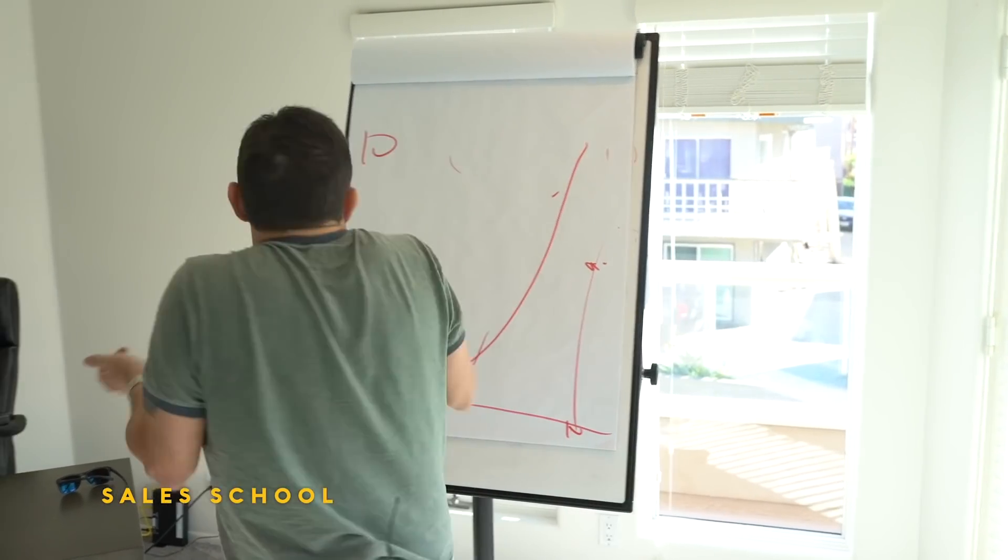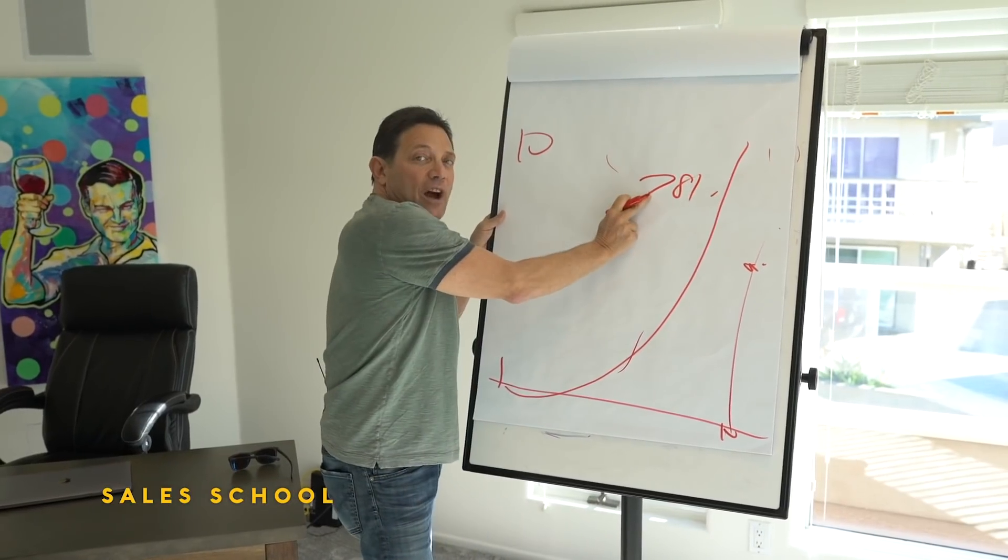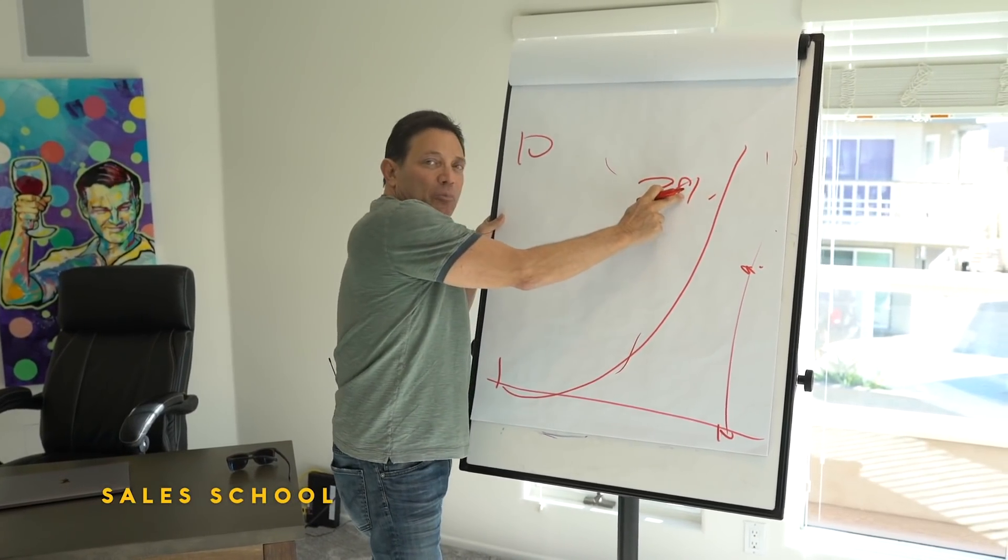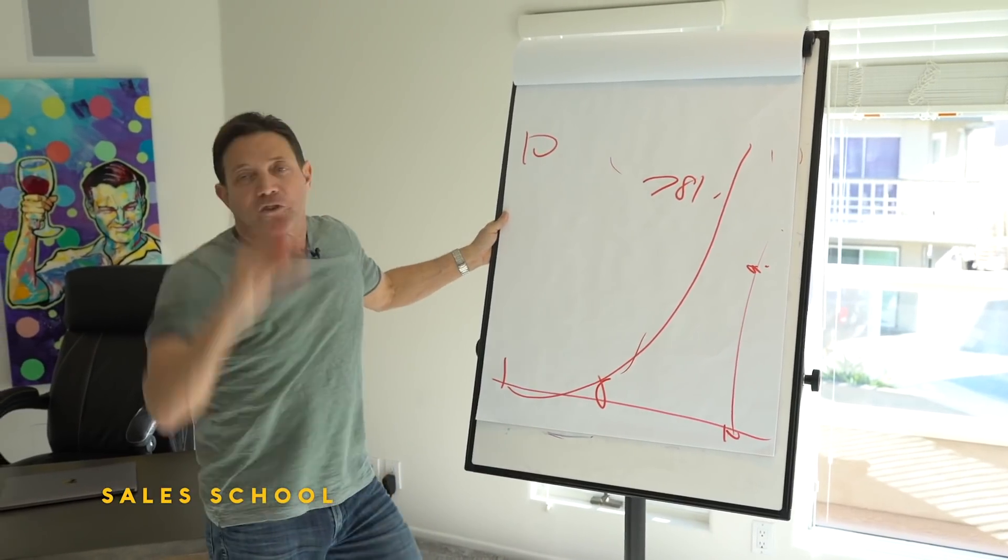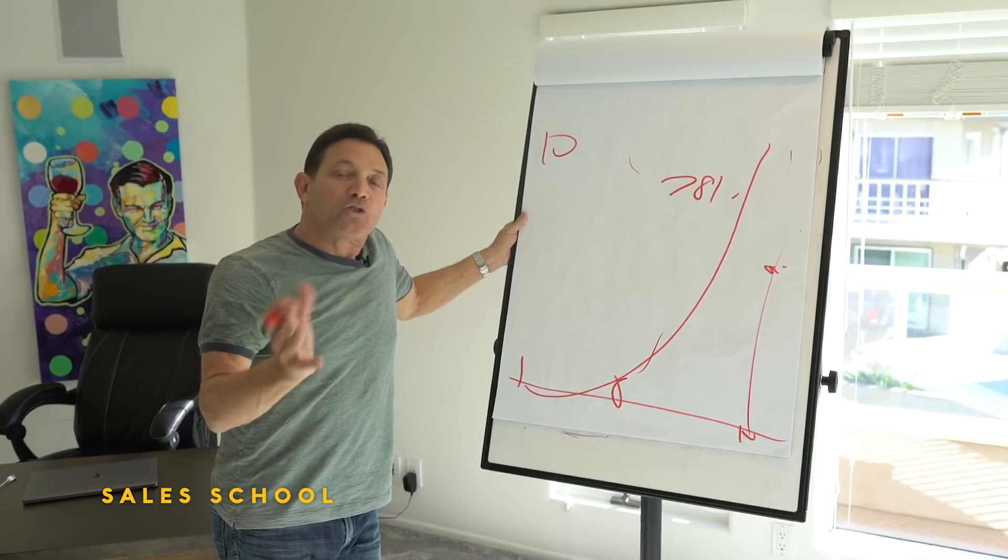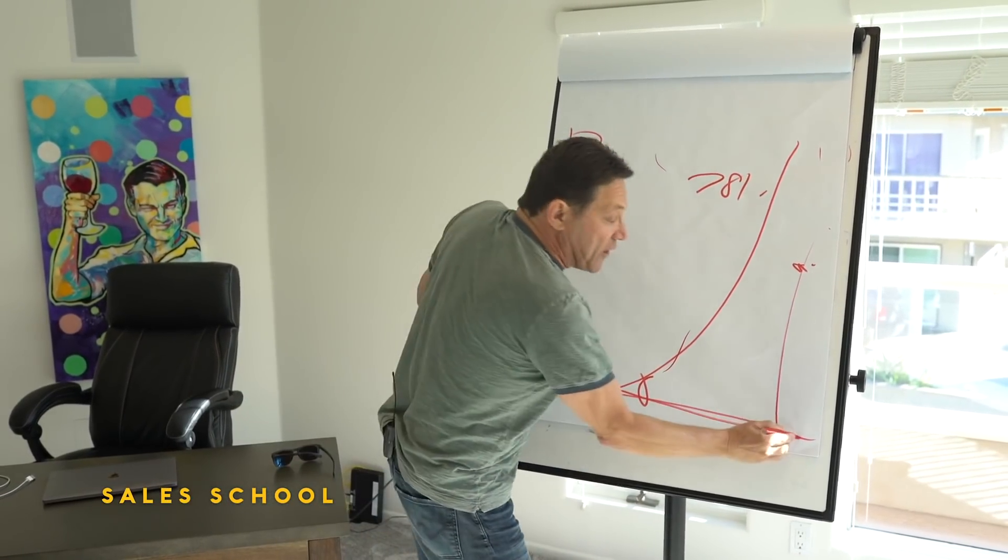Versus someone with a low action threshold like me, where you get me to like a seven—I'm seven on the product, eight on the salesperson, seven on the company, but I have a six action threshold—I'll buy. People with higher action thresholds need to go further down the straight line. They require more loops.